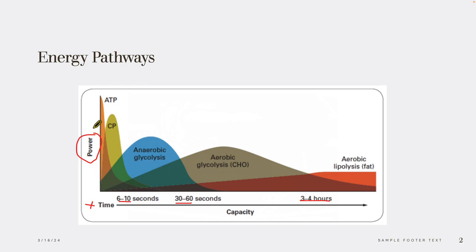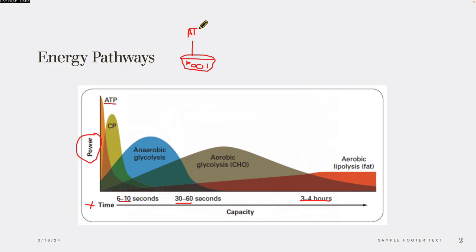For the muscle to contract and do work, we need ATP. In our skeletal muscle, we have a very small amount of ATP stored — like those kiddie swimming pools I drew in class. We have this limited amount of ATP in our muscle that's ready for use, and it plummets very, very quickly — about seven to eight seconds.